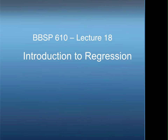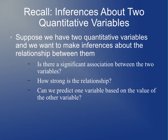This is lecture 18 in BBSP 610. This will be the first of several lectures on regression. The purpose of regression is to make inferences about two quantitative variables — two numeric variables. We want to know if there is a significant association between the two variables, how strong this association is, and whether we can predict the value of one variable based on the other.